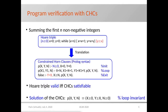Let us see how constraint horn clauses are used for program verification through a simple example. Consider a program for summing the first n non-negative integers. The Hoare triple specifies that the final value of variable y is greater than or equal to the final value of variable x. This property is translated into verification conditions written as constraint horn clauses. They correspond to the loop initialization, the loop execution, and the loop exit respectively. For instance, the last clause states that at loop exit when x is greater than or equal to n, we must have y greater than or equal to x.